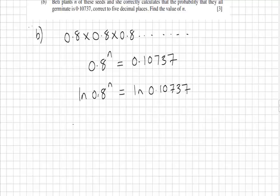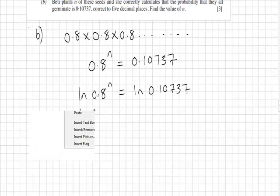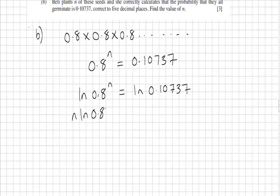This is rules from C2. The power can then, of course, come down to the front. Natural log of 0.8 multiplied by N is equal to the natural log of 0.10737.